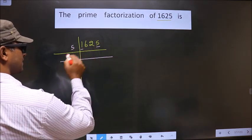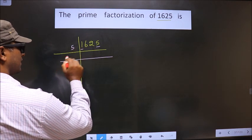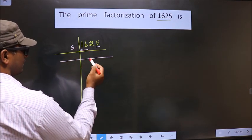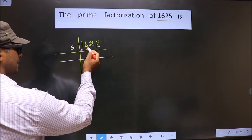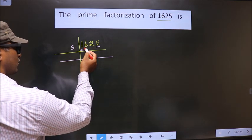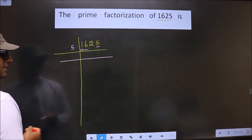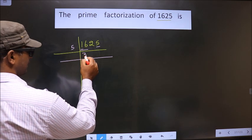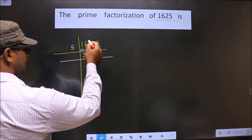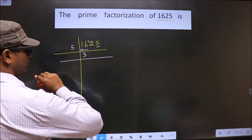Now, first number is 1. 1 is smaller than 5, so you take two numbers, that is 16. Closer to 16 in 5 table is 5 times 3 is 15. 16 minus 15 is 1, 1 carried forward making it 12.